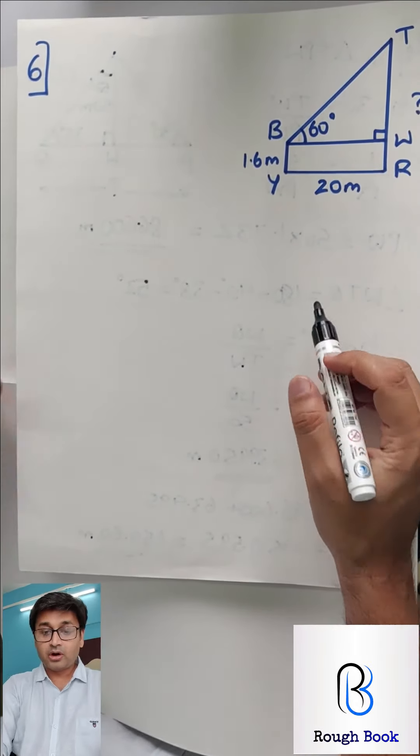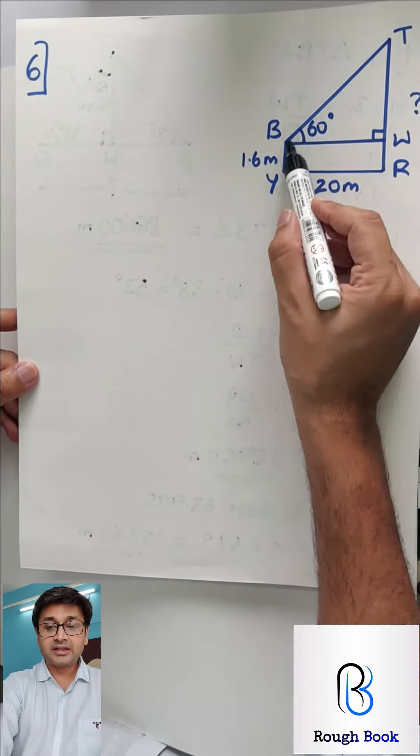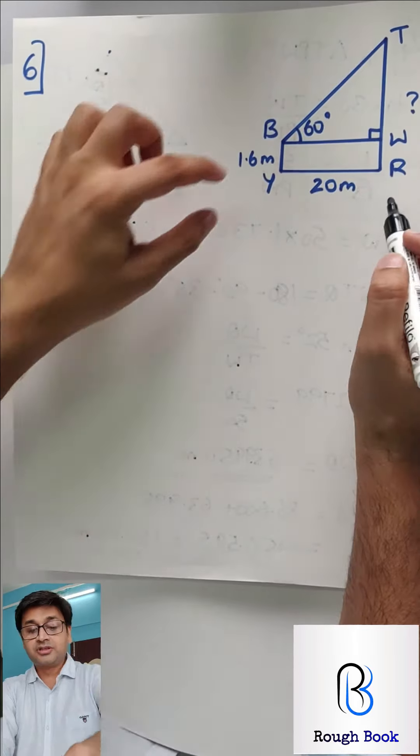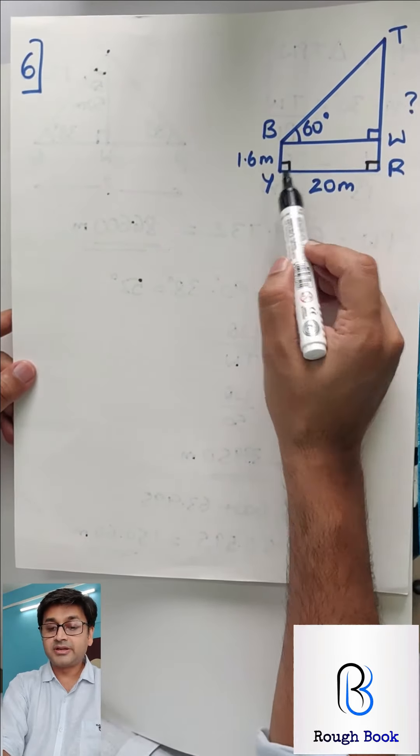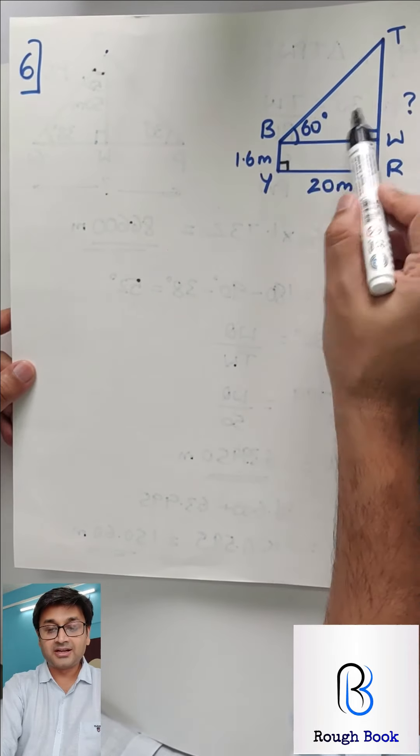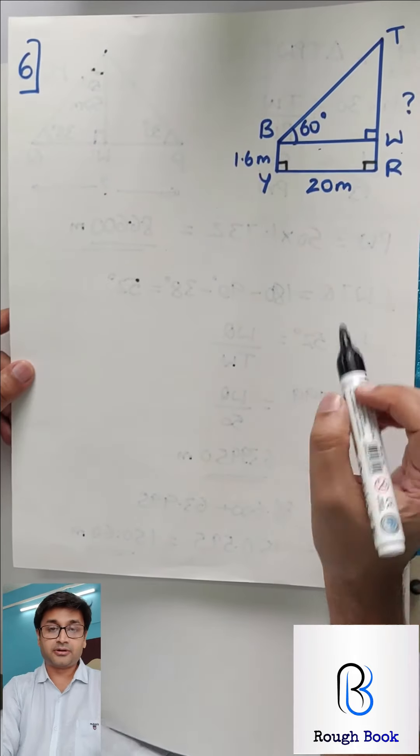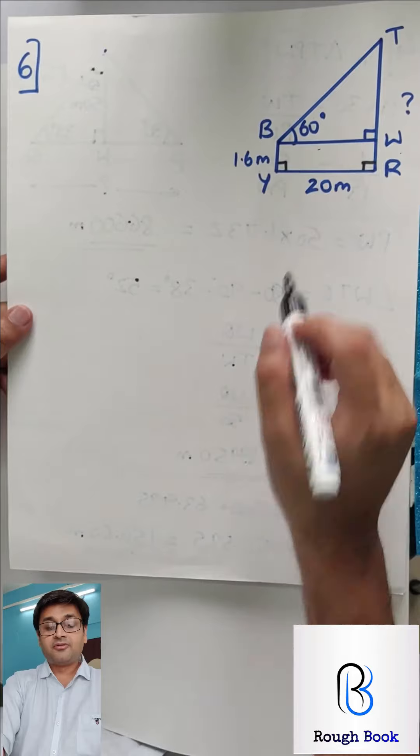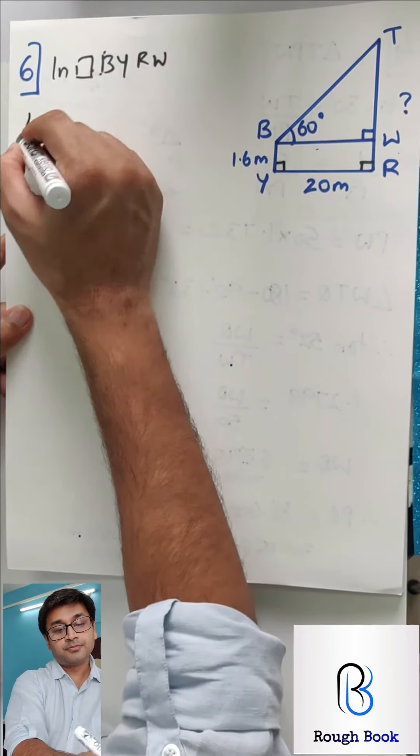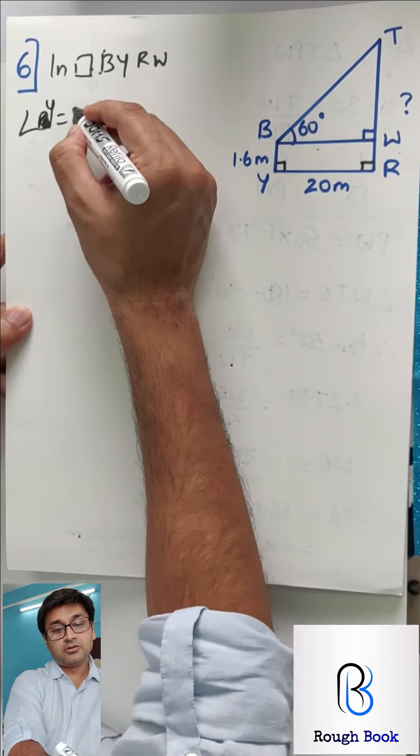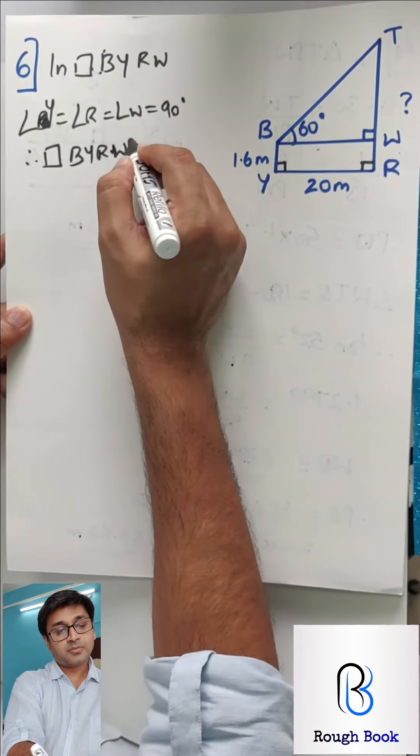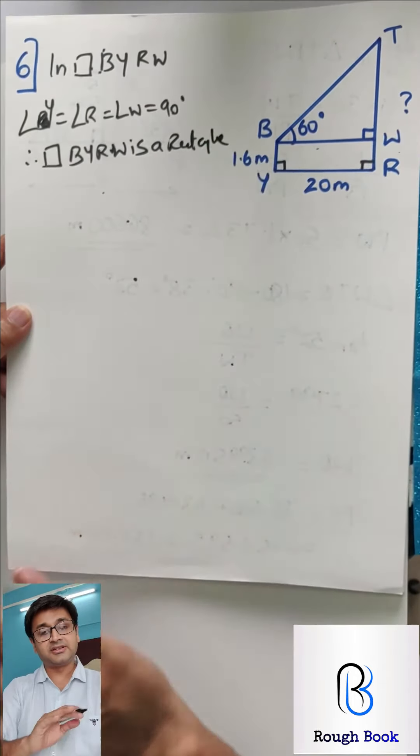Let's go to the next one, number 6. Now here they said that a boy is looking at the tower 20 meters away and the angle of elevation is 60 degrees. And the height of the boy is 1.6 meters. Find the height of the tower. So this basically over here becomes a rectangle. So if this is 1.6, WR is also 1.6. If this is 20, this also is 20. And then you can take triangle TBW, apply tan and get TW and then add that with WR to get the height of the tower. Come on, try it on your own.